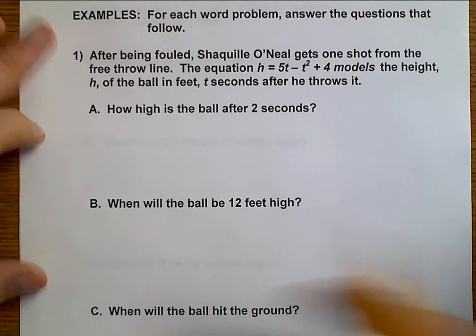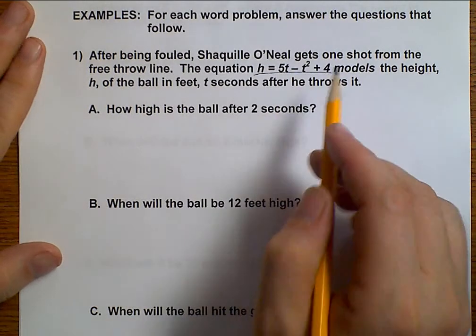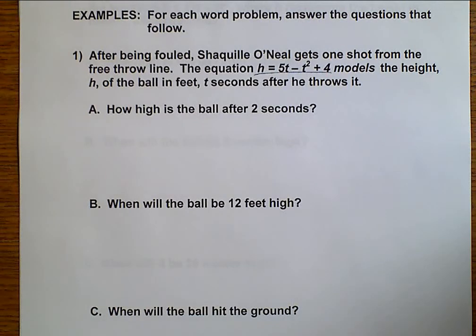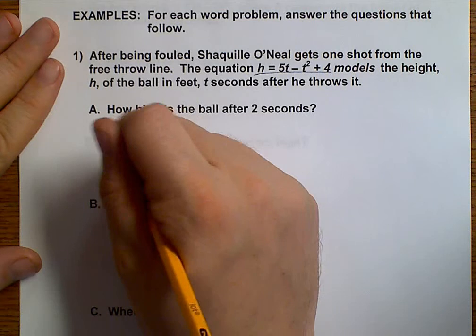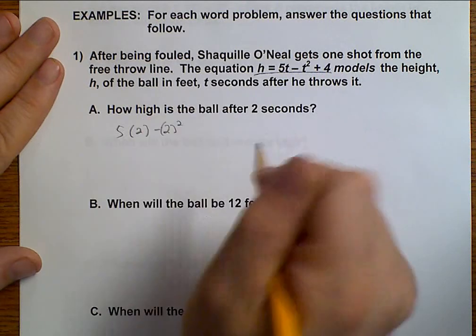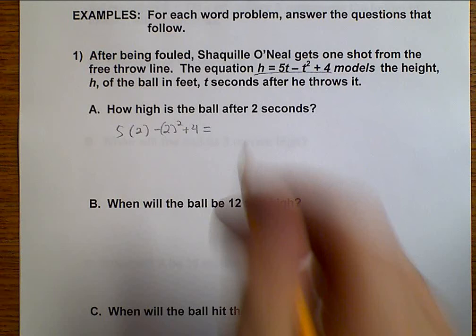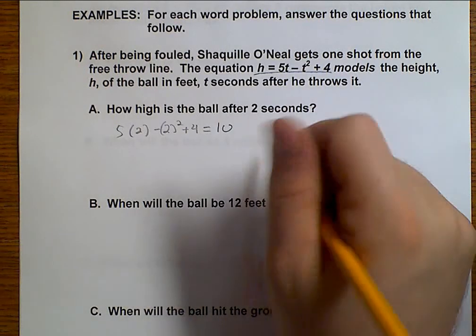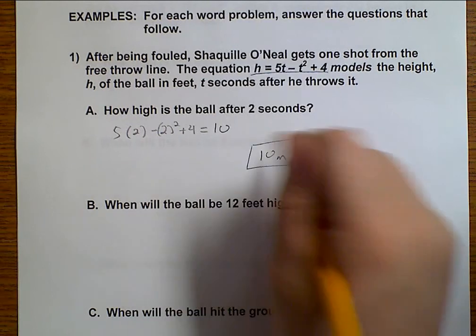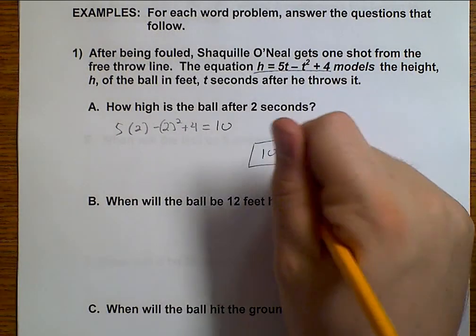After being fouled, Shaquille O'Neal gets one shot from the free throw line and we use this equation to figure out the height of the ball and the time in seconds. So how high is the ball after 2 seconds? Well, 5 times 2 minus 2 squared plus 4, we're going to put that in our calculator, 5 times 2 minus 2 squared plus 4 makes 10. So after 2 seconds, that ball is 10 feet in the air.